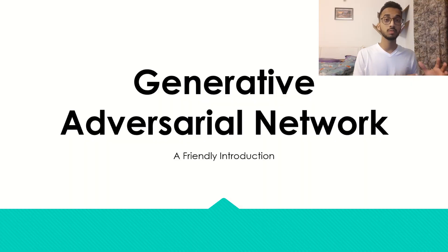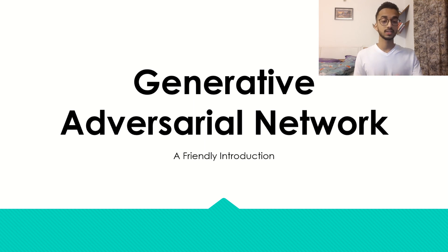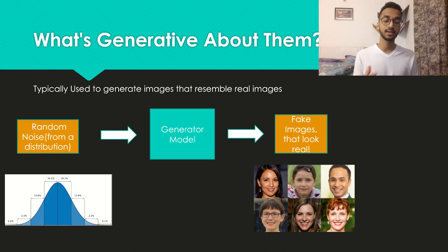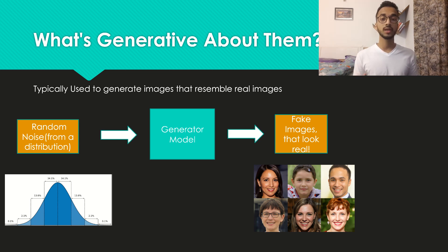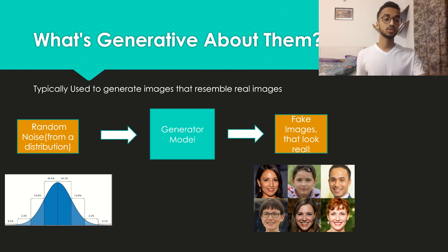Let's break down each term individually in generative adversarial network and see why it's called the way it is. First, what's generative about them? The reason it's called that way is because it's typically used to generate images that resemble real images. As an input to the generator model, you provide some random noise from a particular distribution — most commonly a normal distribution — and using that input it's able to generate a realistic looking image. The faces you're seeing on the right hand side are images that never existed, created by a GAN.